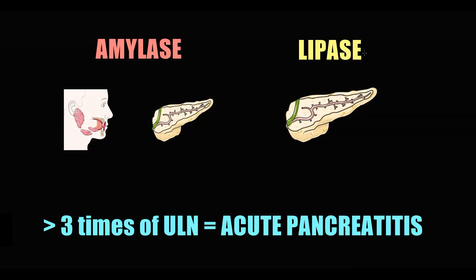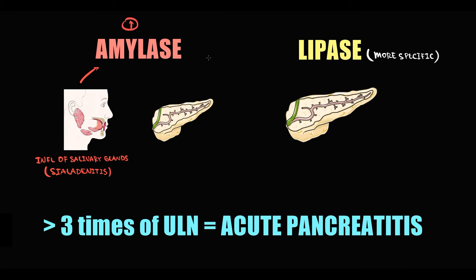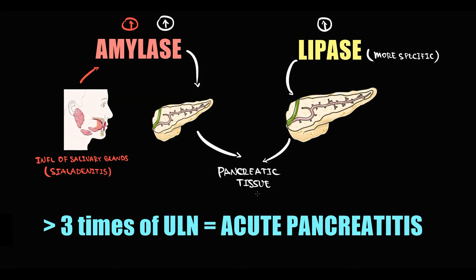Both lipase and amylase have similar features, but we consider lipase a more specific enzyme. The reason is that 99% of lipase in our organism is secreted by acinar cells of the pancreatic tissue. Amylase, however, is secreted not only by the pancreatic tissue but also by the salivary glands in the oral cavity, so amylase can also be elevated in inflammation of the salivary glands — so-called sialoadenitis. If lipase is elevated, it most probably indicates pathology of the pancreatic tissue. Elevation of both amylase and lipase more than three times the upper limit of normal is a diagnostic criterion for acute pancreatitis.